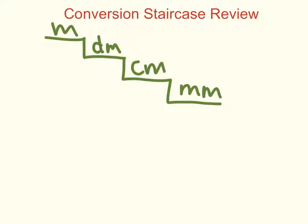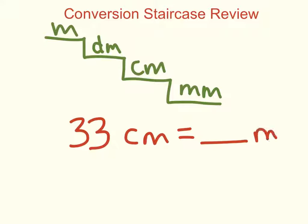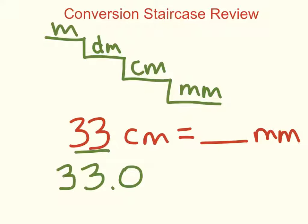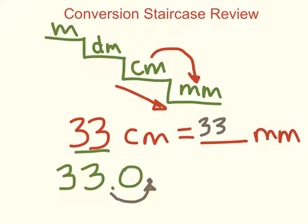Here's another example. Let's say you have 33 centimeters and you want to change that to millimeters. Since there's no decimal in 33, it would go at the end, so I can rewrite it as 33.0. On the conversion staircase, I'm going from centimeters to millimeters — one step down and to the right. My decimal moves one place value to the right, giving me 330.0. So 33 centimeters is equal to 330 millimeters.